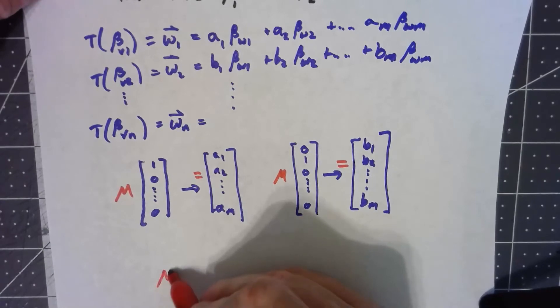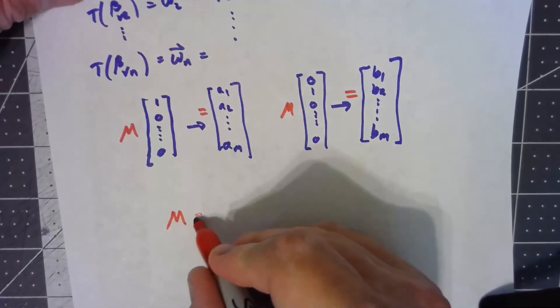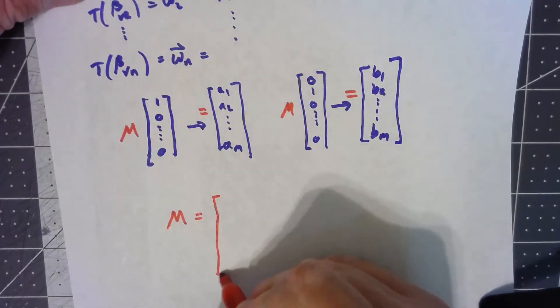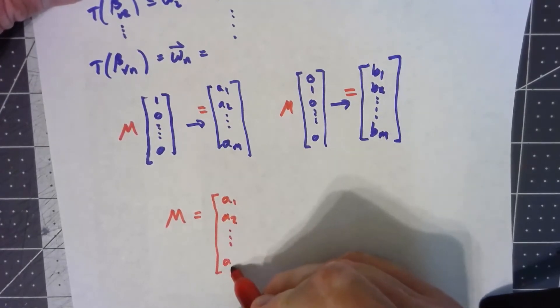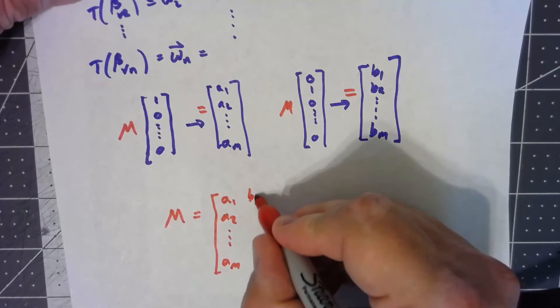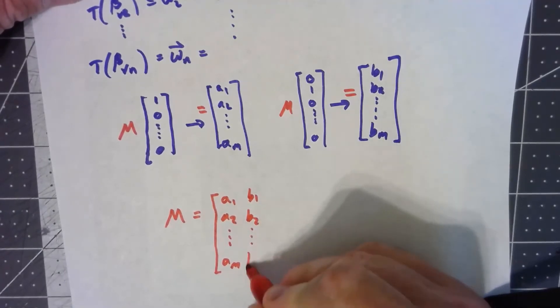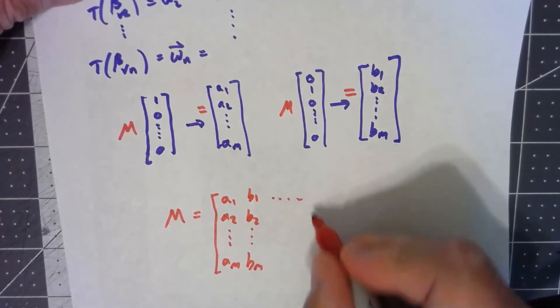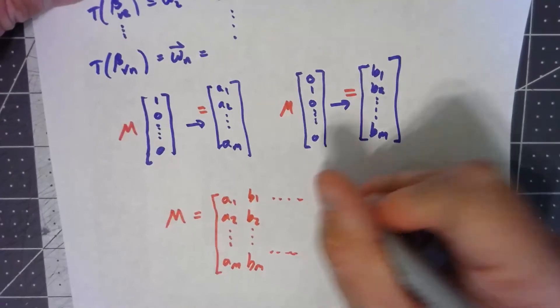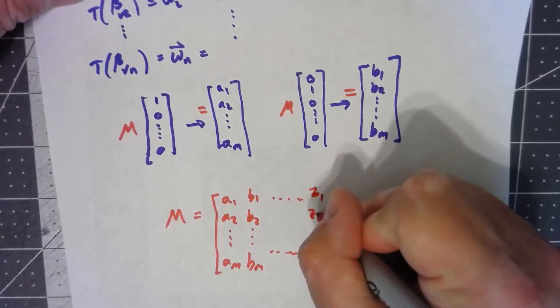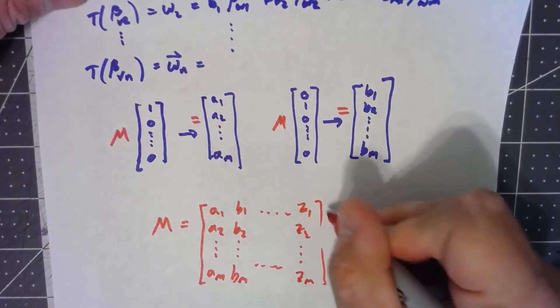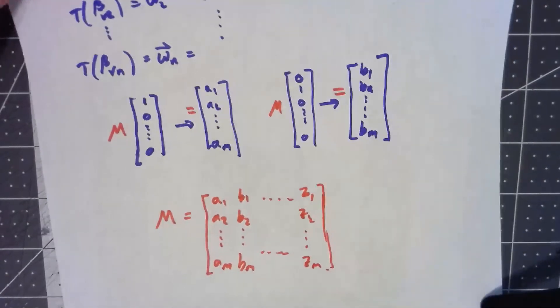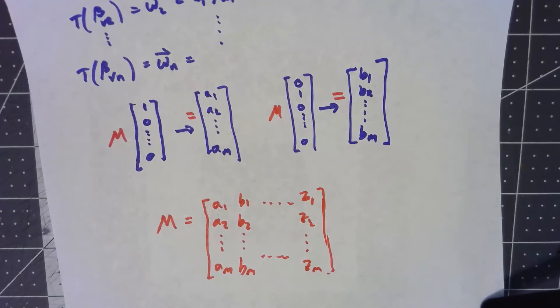So right away we get that our matrix M has to be A1, A2, down to AM, then B1, B2, down to BM, and as far out as we go. I'll just say Z1, Z2, down to ZM, though I'm not saying here that we've got 26 columns. It all depends on how many basis vectors we had.